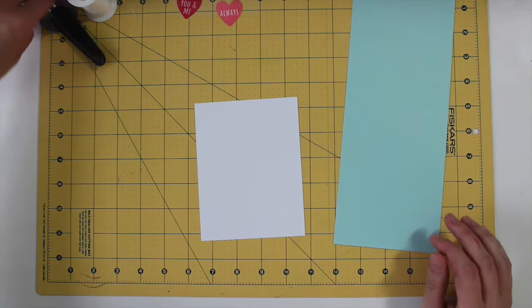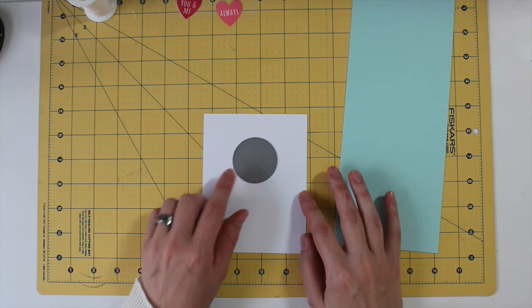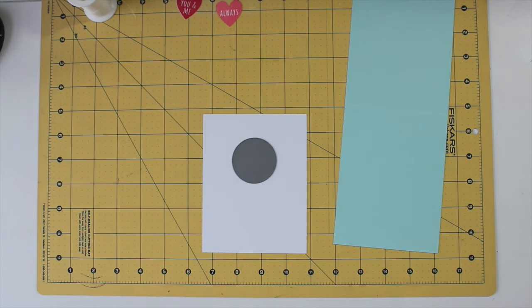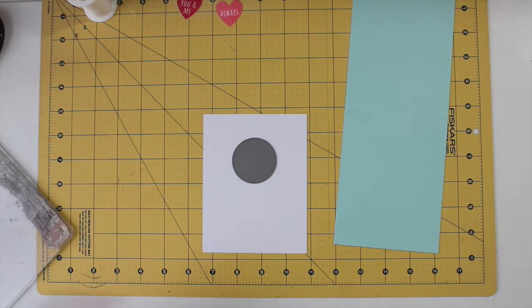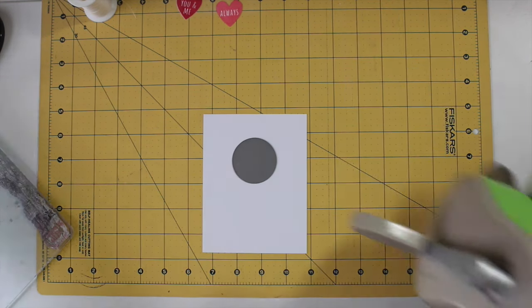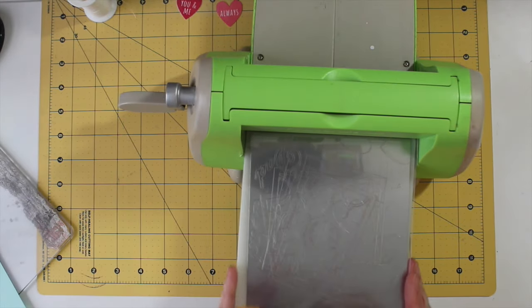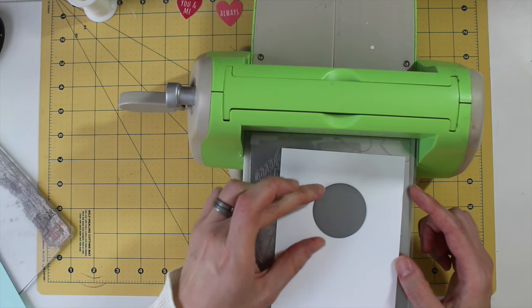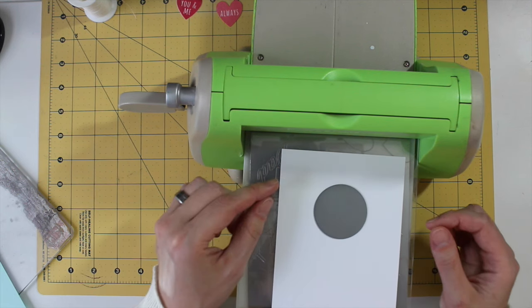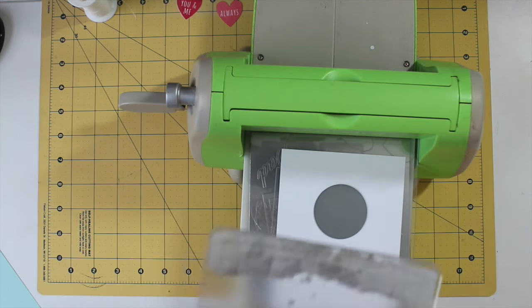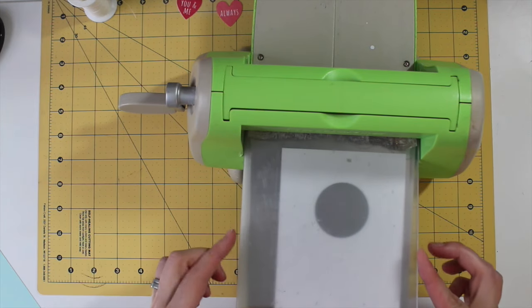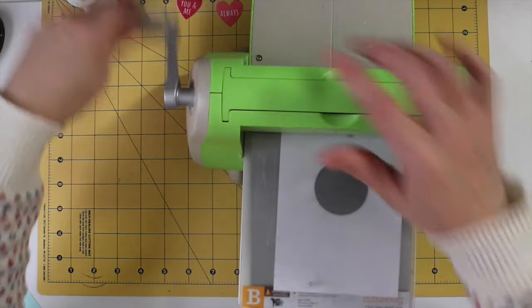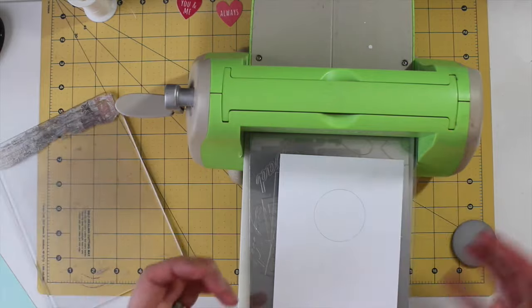But right now I'm going to die cut the window in the actual card front. So this circle is from the 1 3/4 Limitless Layer circle die collection. It's just the basic circle. I'm going to eyeball this because I know I'm going to be doing some trimming to even it up later. But having the panel cut to 4 1/4 by 5 1/2 really helps me visualize where I want that die to go. So I'm going to go ahead and just run this through the die cut machine and pop that out.